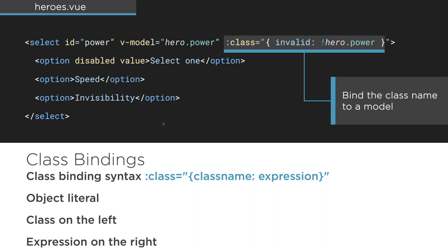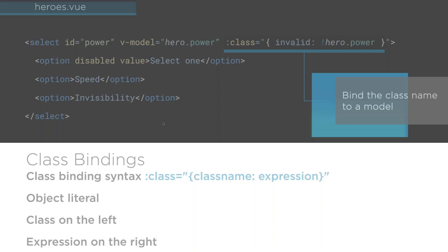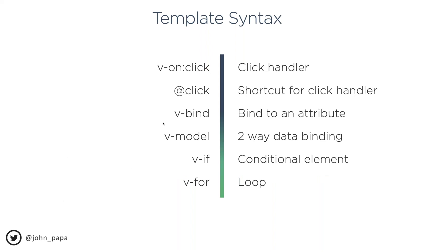That covers about 75% of Vue's template syntax. To recap: '@click' or 'v-on:click' handles events; 'v-bind' or ':' binds to attributes; 'v-model' does two-way binding; 'v-if' for conditional elements; and 'v-for' to loop over items. Get these down and you can build some really robust apps right out of the box.